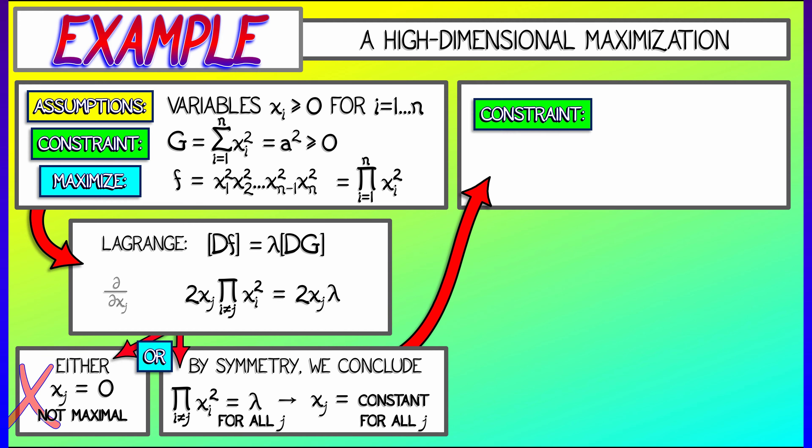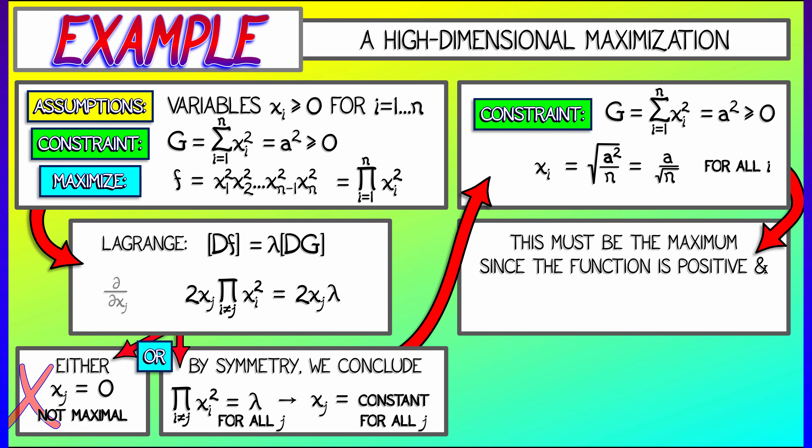So if I substitute that conclusion into the constraint, I really get that n times xi squared equals a squared. Solving for xi, I get that xi equals a over square root of n. This is the same number for all values of i.